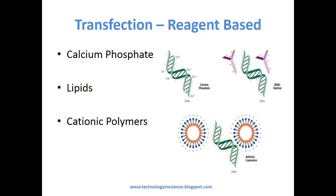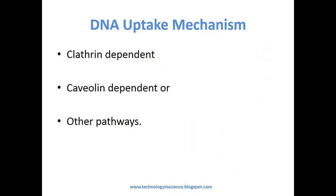Calcium phosphate mediated transfection. The mechanism of DNA uptake by the calcium phosphate mediated method is not well understood. In this method, the DNA to be transfected is mixed with calcium chloride, then this is added slowly to a buffered saline or phosphate solution. Incubating this mixture with the cells to be transfected, the cells will take up the DNA by endocytic pathways.